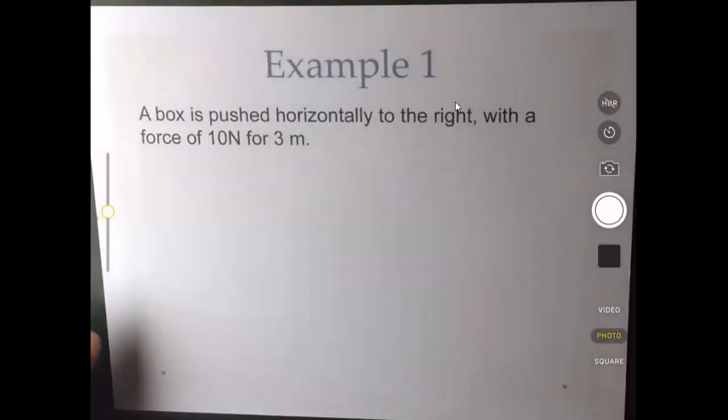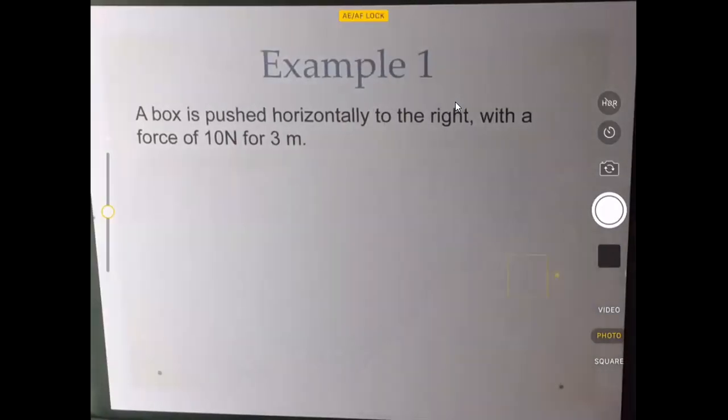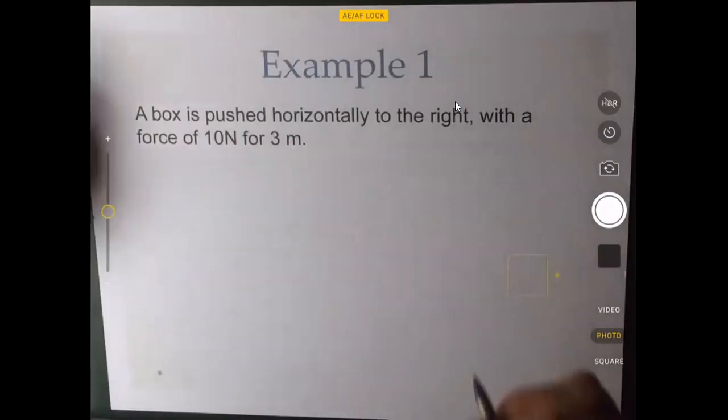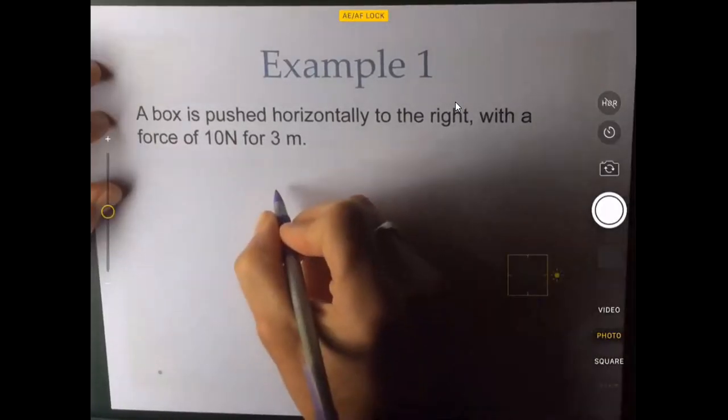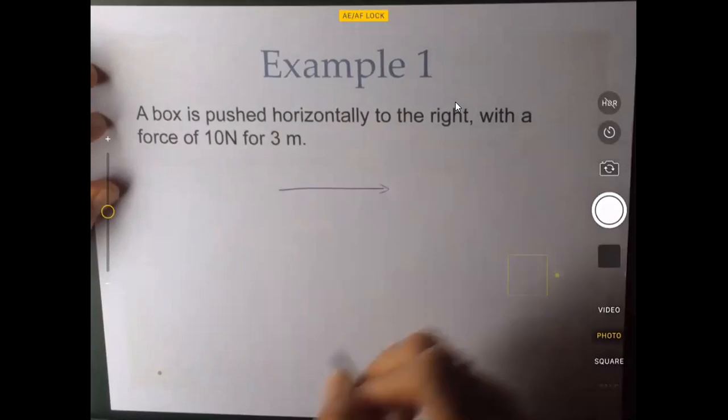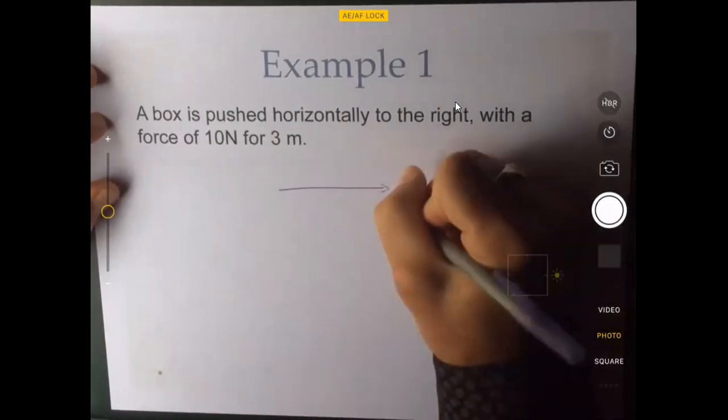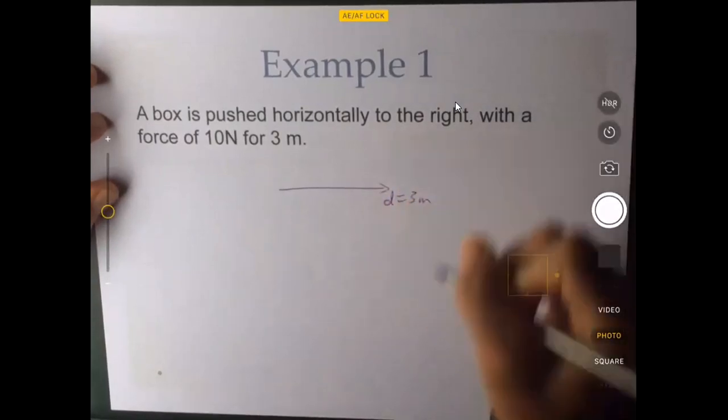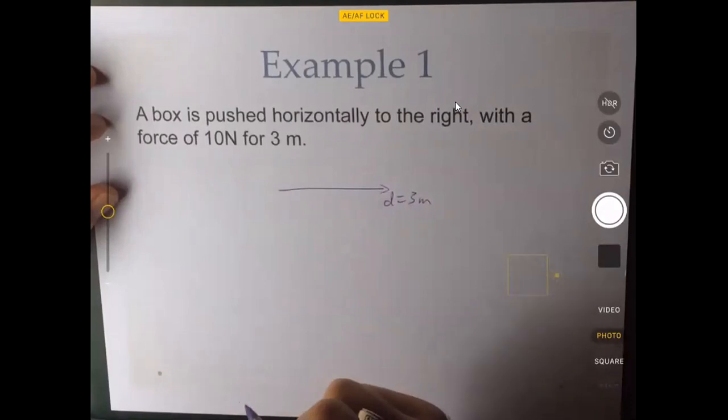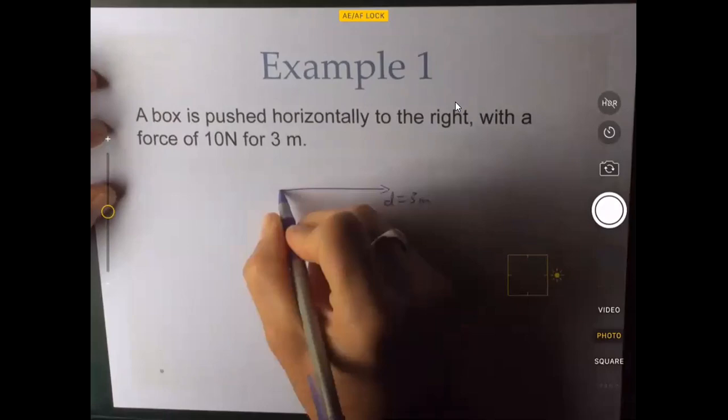So now you should be able to see example one, step one, which is for a box pushed horizontally to the right with a force of 10 newtons for 3 meters. Step one, draw the displacement vector, has a magnitude of 3 meters, and draw the force vector. That is 10 newtons. And so these are overlapping.